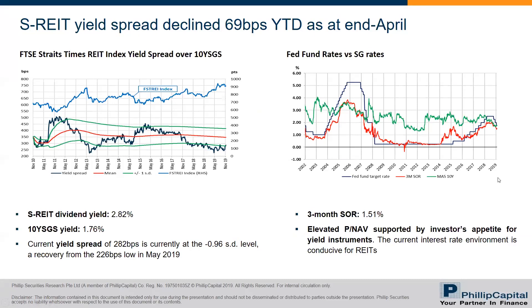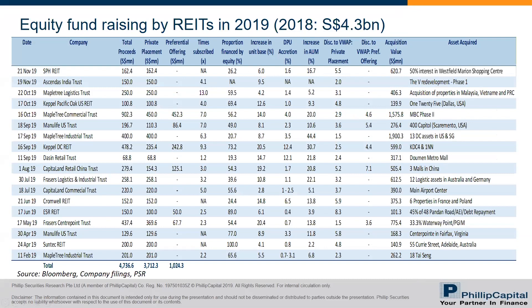Due to high prices, the price-to-NAV is slightly elevated; however, this is supported by investors' appetite for yield instruments. In this low interest rate environment, it is very conducive for REITs in terms of acquisition accretion. REITs have been taking advantage by raising funding, and equity funding conducted by REITs in 2019 has surpassed 2018 — currently at $4.7 billion versus $4.3 billion for the full year of 2018. Three recent private placements were SPH, Ascendas India, and Mapletree Logistics Trust. Mapletree Logistics Trust's issue was 13 times covered — the highest for 2019.